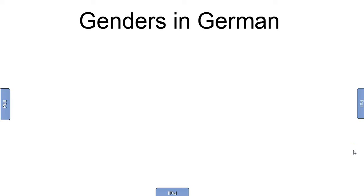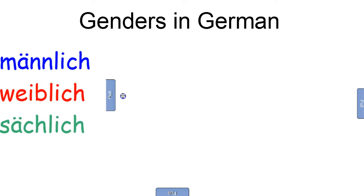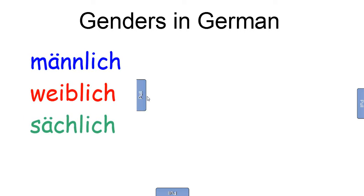Good old genders. So whenever you learn a foreign language — except for some reason English — there are genders. The most exciting thing about German is that there are three different genders. These three genders in German are männlich, weiblich, sächlich — masculine, feminine, neuter.